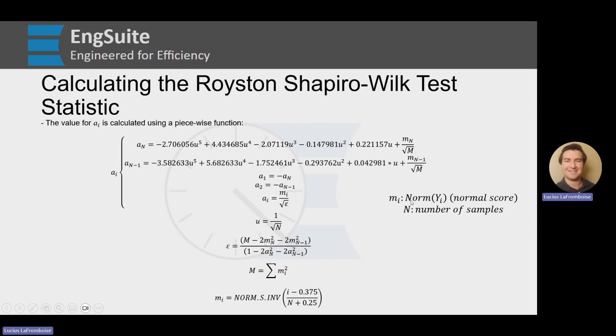m_n over the square root of capital M. So m_i is our normal score. Now you may remember from our Ryan Joyner test that we use this normal score. The normal score is calculated down here, norm.s.inv of (i minus 0.375) over (n plus 0.25). If you're curious to learn more about what this normal score is, please check out that Ryan Joyner test. That will go into the definition of normal score and what this is. We're not going to go into that today because we still have plenty of equations to get through. But this capital M value is just the sum of the squares of all of our m_i values.